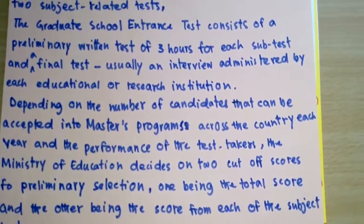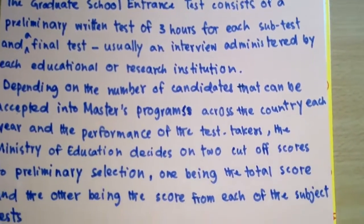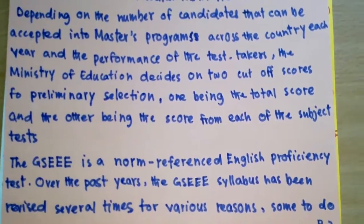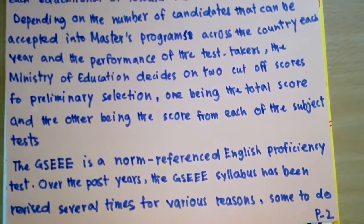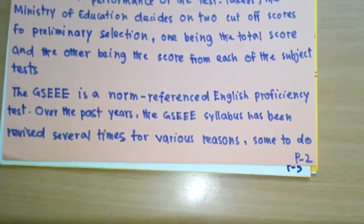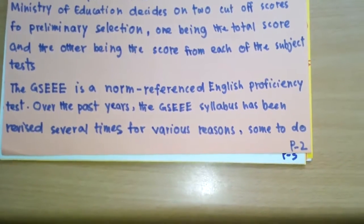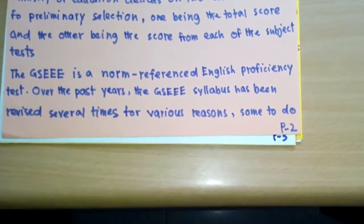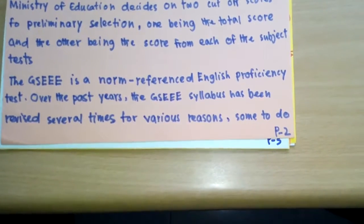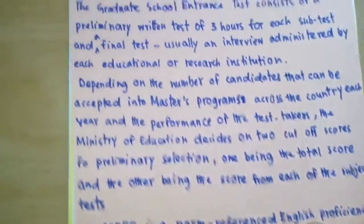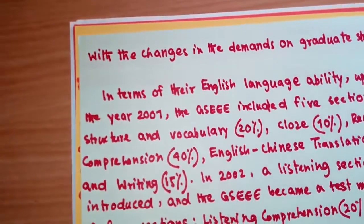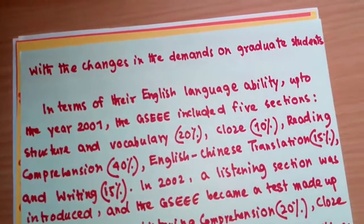Depending on the number of candidates accepted into master's programs each year and the performance of test takers, the Ministry of Education decides on two cutoff scores: a preliminary selection based on the total score and the score from each subject test. The GSEEE is a norm-referenced English proficiency test, and its syllabus has been revised several times due to changes in demands on graduate students.